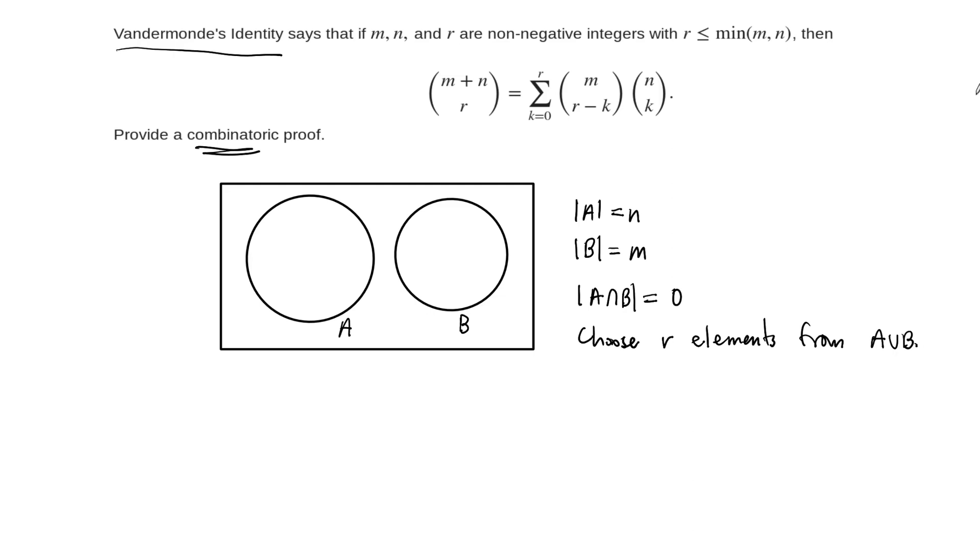So on one hand, this argument is exactly the argument, the number that we're given on the left-hand side. We want to choose r elements from A union B. Since these are disjoint, the cardinality of A union B is always cardinality of A plus cardinality of B.